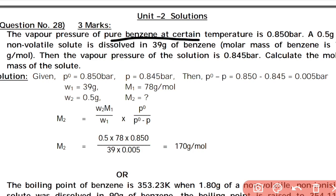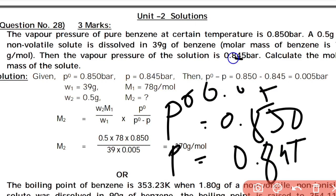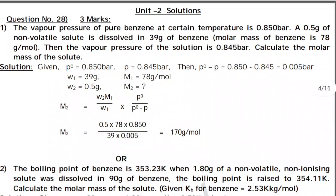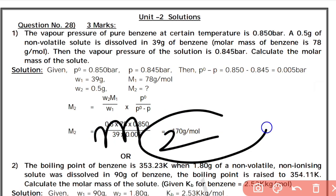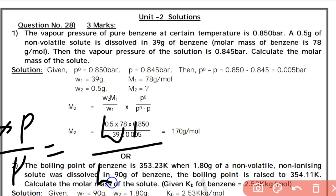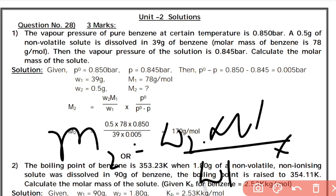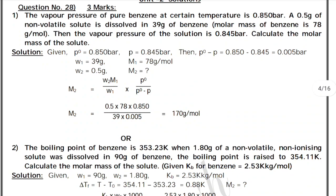The vapor pressure of pure benzene at a certain temperature is 0.850 bar. 0.5 grams of a non-volatile solute is dissolved in 39 grams of benzene; molar mass of benzene is 78 g/mol. The vapor pressure of the solution is 0.845 bar. So P0 = 0.850, P = 0.845, delta P = 0.005. We calculate molar mass of the solute using the formula: delta P / P0 = (w2 / M2) / (w1 / M1), rearranged as M2 = w2 × M1 × P0 / (w1 × (P0 − P)).